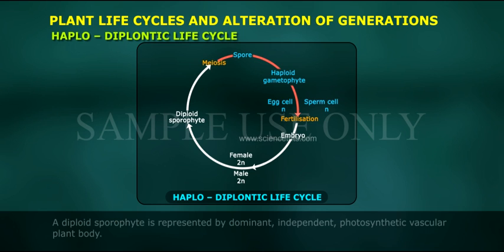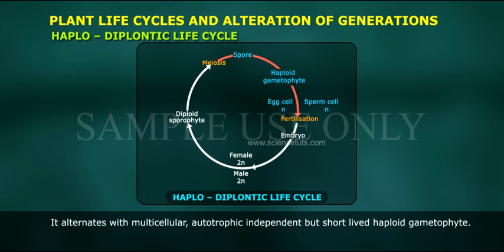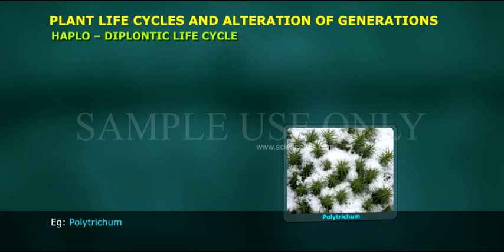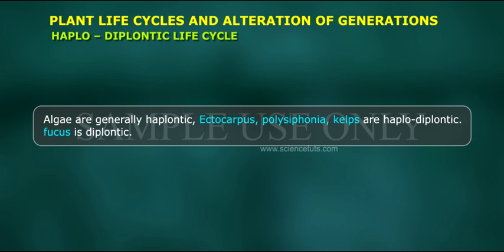In pteridophytes, a diploid sporophyte is represented by a dominant, independent, photosynthetic, vascular plant body. It alternates with a multicellular, autotrophic, independent but short-lived haploid gametophyte. Ectocarpus, Polysiphonia, and Kelps are haplodiplontic.